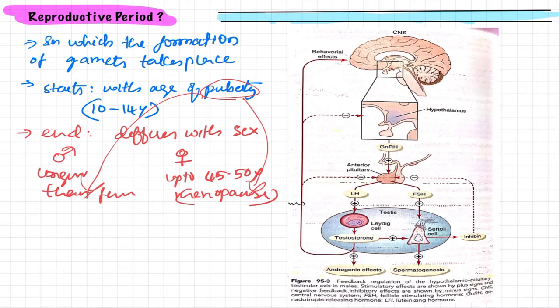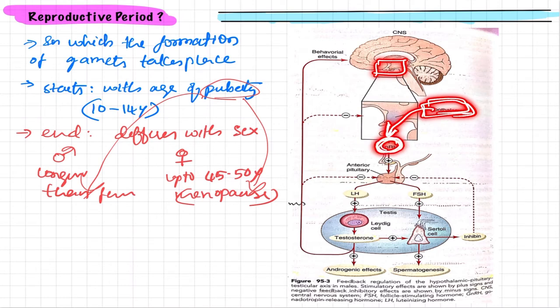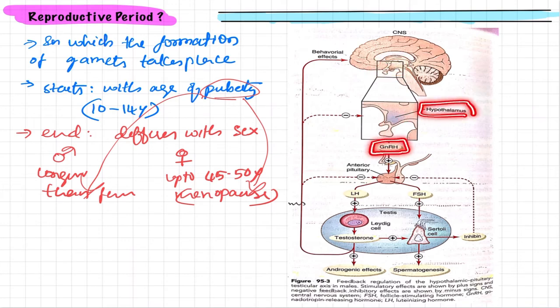As soon as the onset of puberty occurs, the hypothalamus — lying here in the diagram — releases a hormone known as gonadotropin-releasing hormone (GnRH). This GnRH has a positive effect on the anterior pituitary.